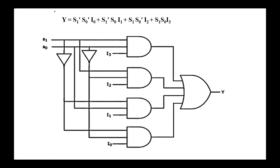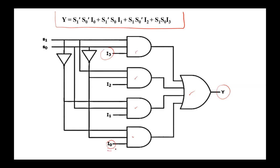Here is the logic circuit for the multiplexer. We have 4 AND gates and 1 OR gate to connect the outputs of the AND gates to obtain the output of the multiplexer. Each of the input lines I0 through I3 is applied to an AND gate along with the proper selection signals. For example, with I0 we apply not S1 and not S0; with I1 we apply not S1 and S0, etc.